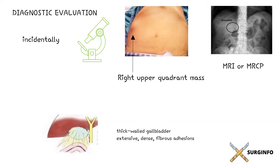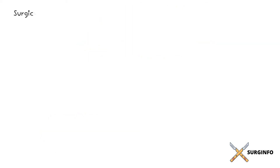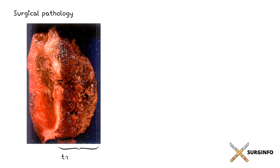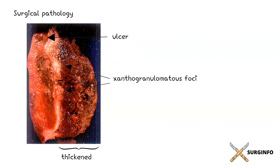Intraoperative findings cannot reliably differentiate between gallbladder cancer and xanthogranulomatous cholecystitis. On gross examination, the gallbladder is thickened and the serosa is covered with dense fibrous adhesions. The mucosal surface may be ulcerated, and cross-sections through the wall reveal xanthogranulomatous foci, which appear as yellow nodules or plaques. These yellowish foci may extend into adjacent structures such as the liver, duodenum, transverse colon, and omentum.